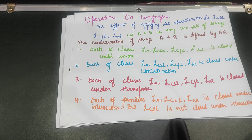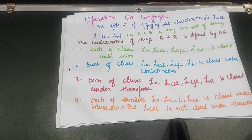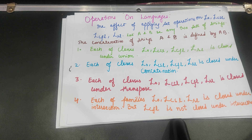Context-Free language is not closed under Intersection — that is the exception. To summarize: Union is performed on all four language types. Concatenation is performed on all four languages. Transpose is performed on all four languages. But Intersection is performed only on Type-0, Context-Sensitive, and Regular languages — it is not performed on Context-Free language.